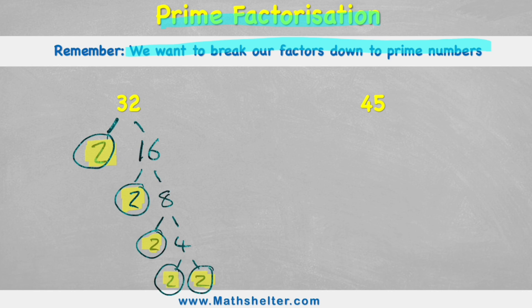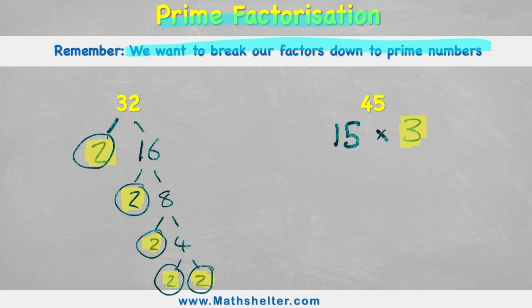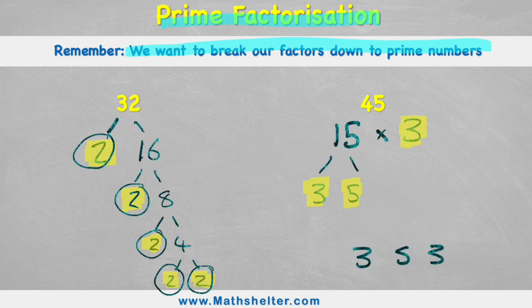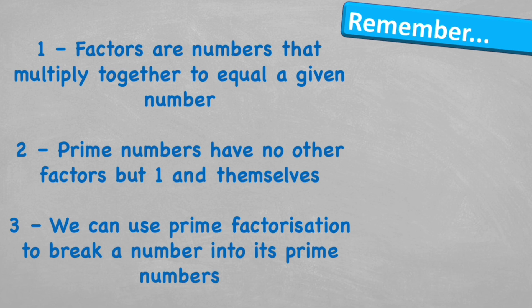Now let's use prime factorization to break down the number 45. I can start with any factor pair, so I'm going to choose 15 multiplied by 3, because 15 times 3 is 45. I can see straight away that 3 is a prime number, so I don't need to carry on that side of the factor tree. But 15 is not prime, because 15 can be made up of 3 times 5. I can see another 3 there — that's a prime number — and 5 is also a prime number. So the prime factors of 45 are 3, 5, and 3. Let's check: 3 times 5 is 15, and 15 times 3 is 45. So to summarise: factors are numbers that multiply together to equal the given number; prime factors have no other factors but 1 and themselves; and we can use prime factorization to break a number into its prime numbers, then multiply those primes back together to get the original number.